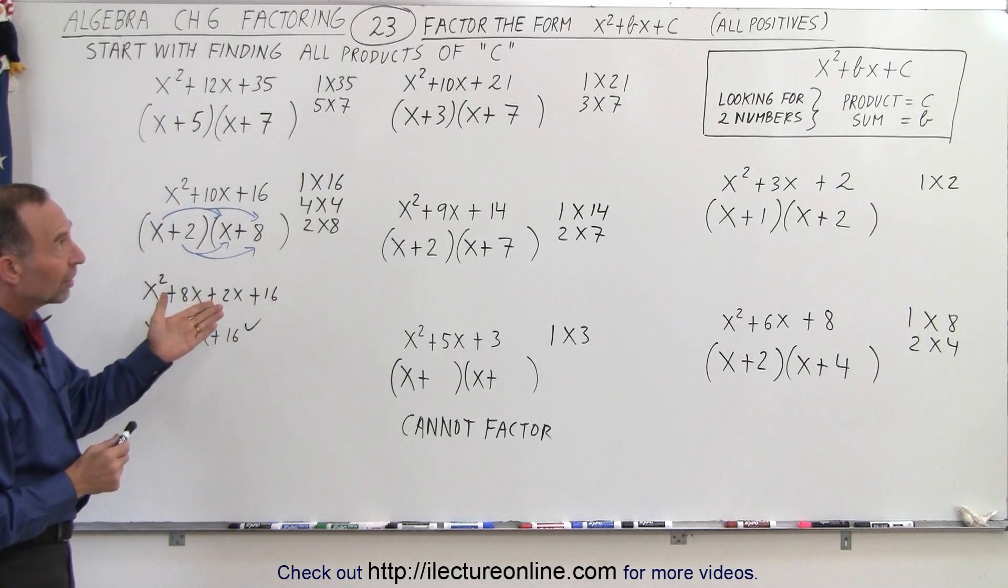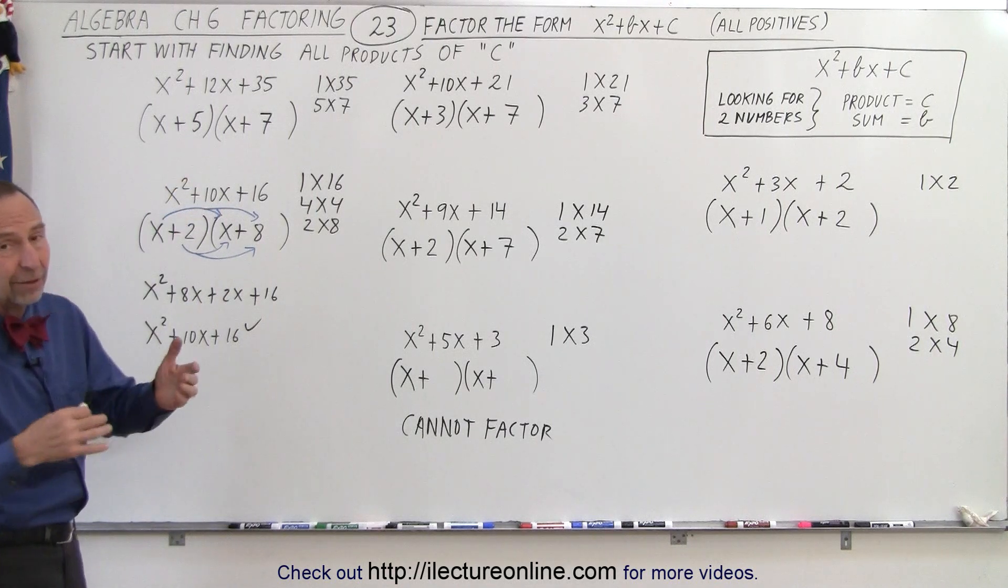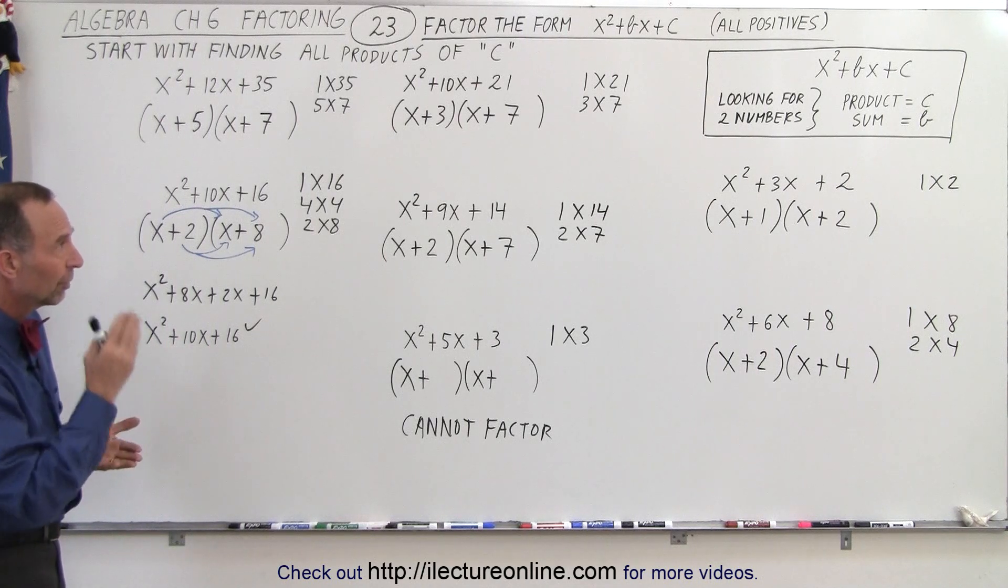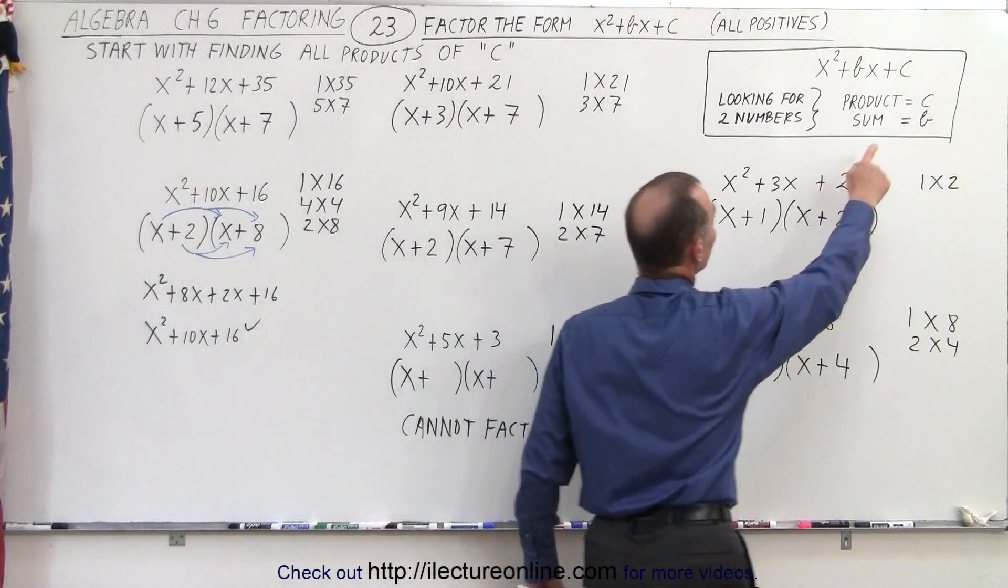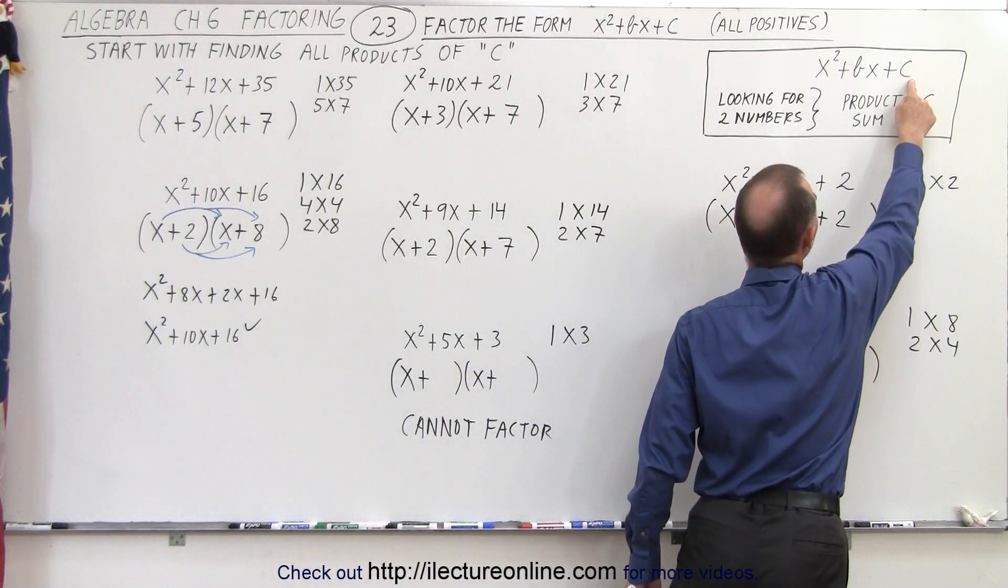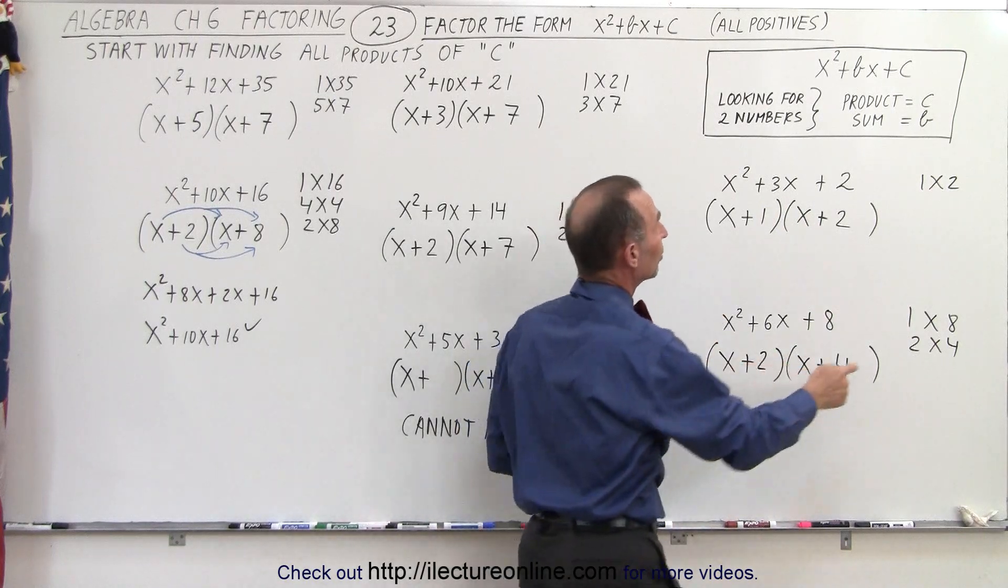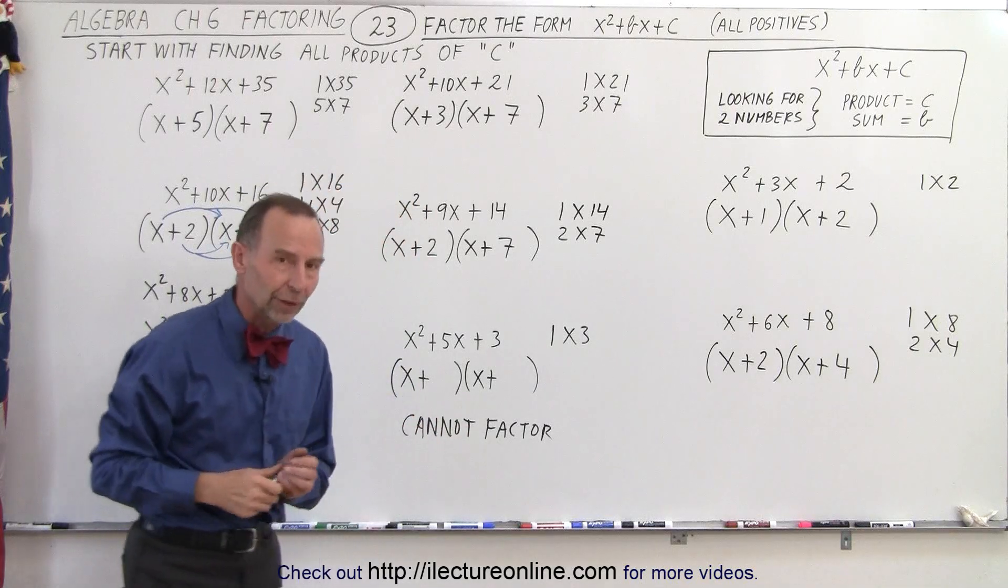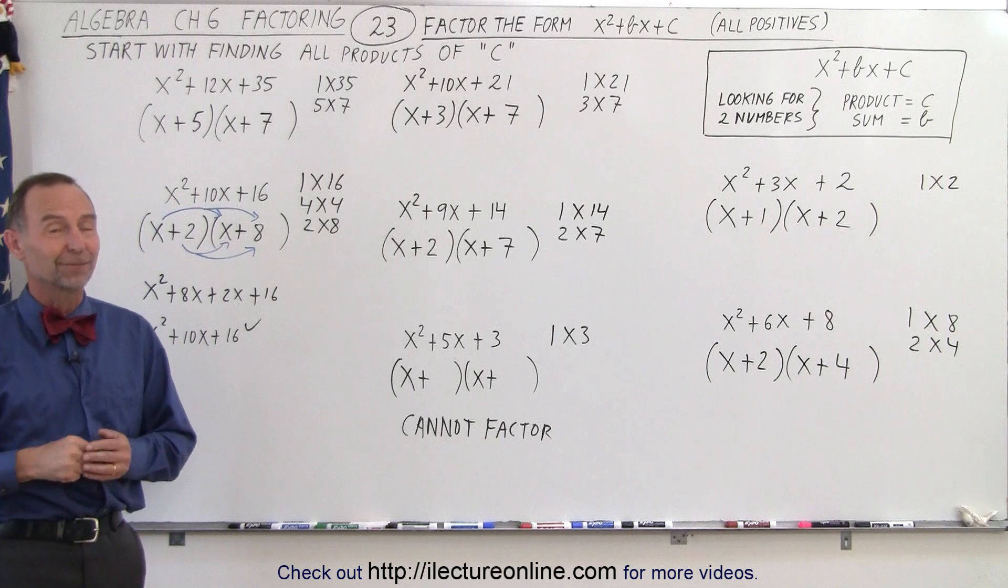And that is how it's done when we have a trinomial of the form x squared plus bx plus c that we're trying to factor. Remember, it's all positives. And the idea is look for two numbers. When you multiply them together, you get c. So you look for all the combinations. Then when you add the two numbers together, you should get b. And if that matches, then you have the winner. Then you have the proper way of factoring a trinomial like that. That's how it's done.